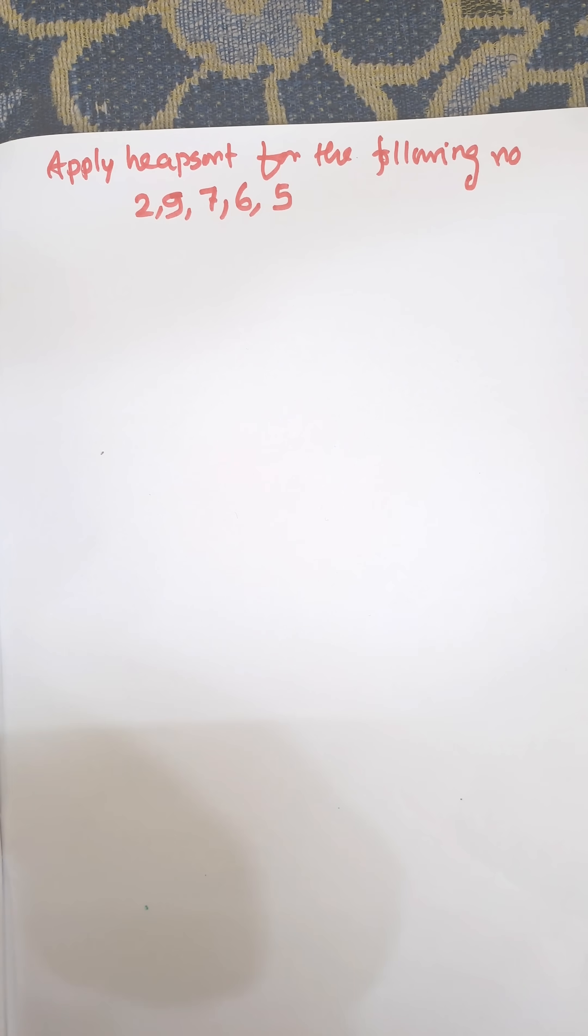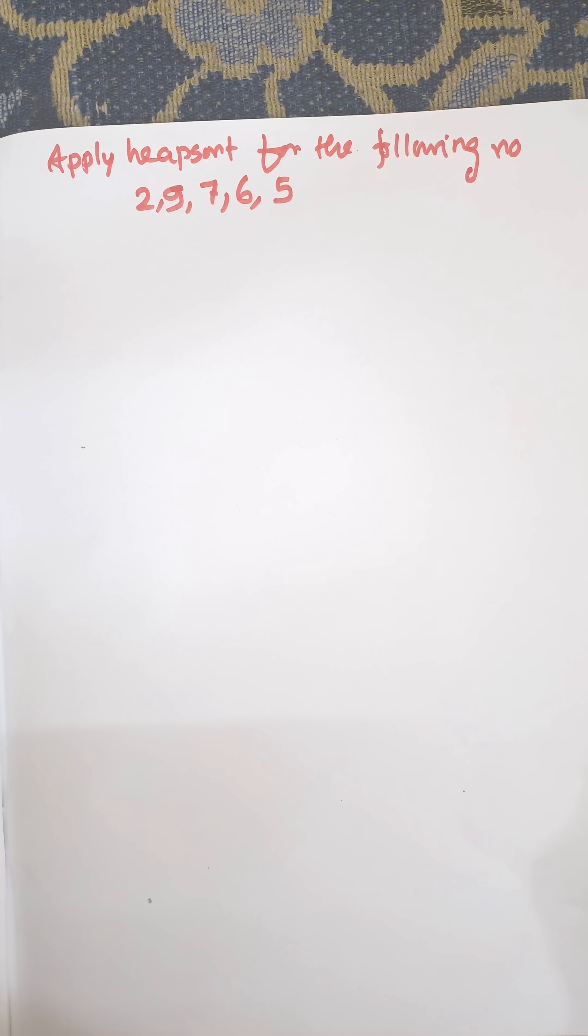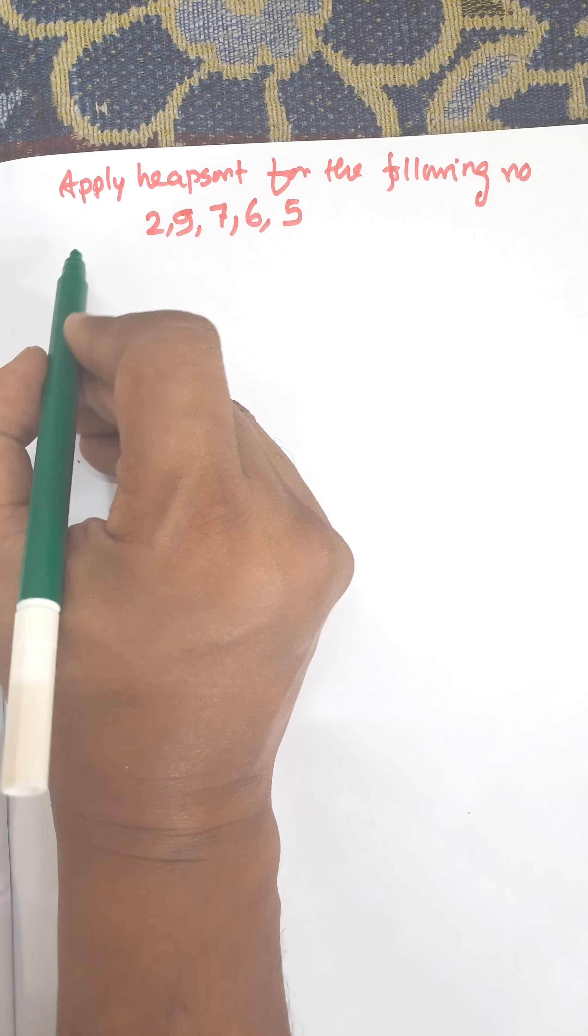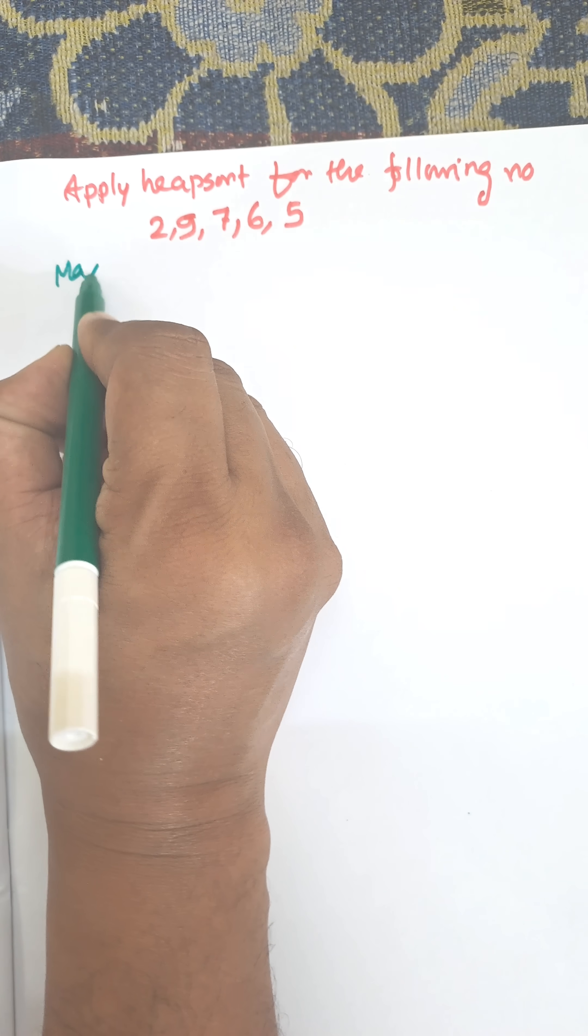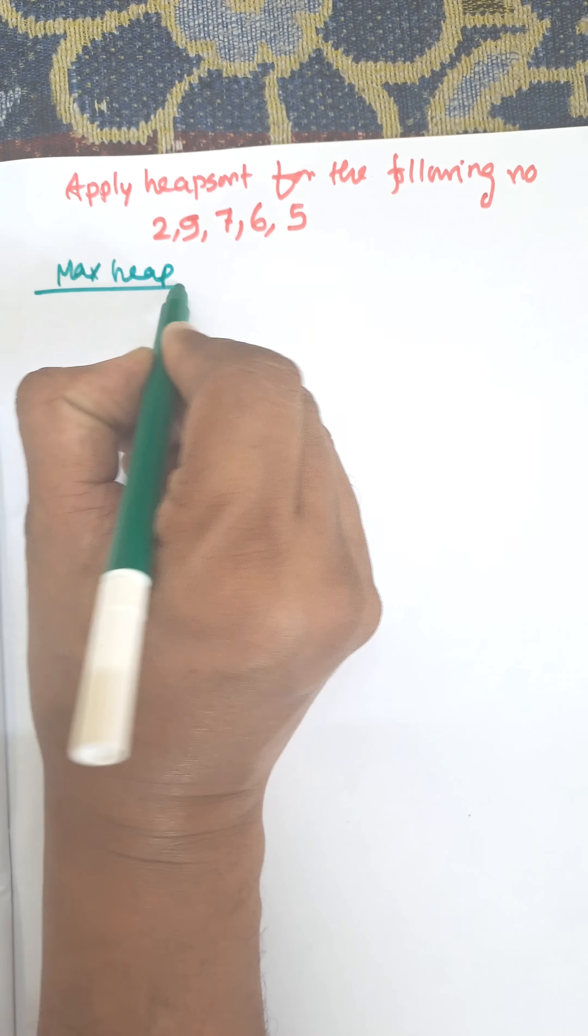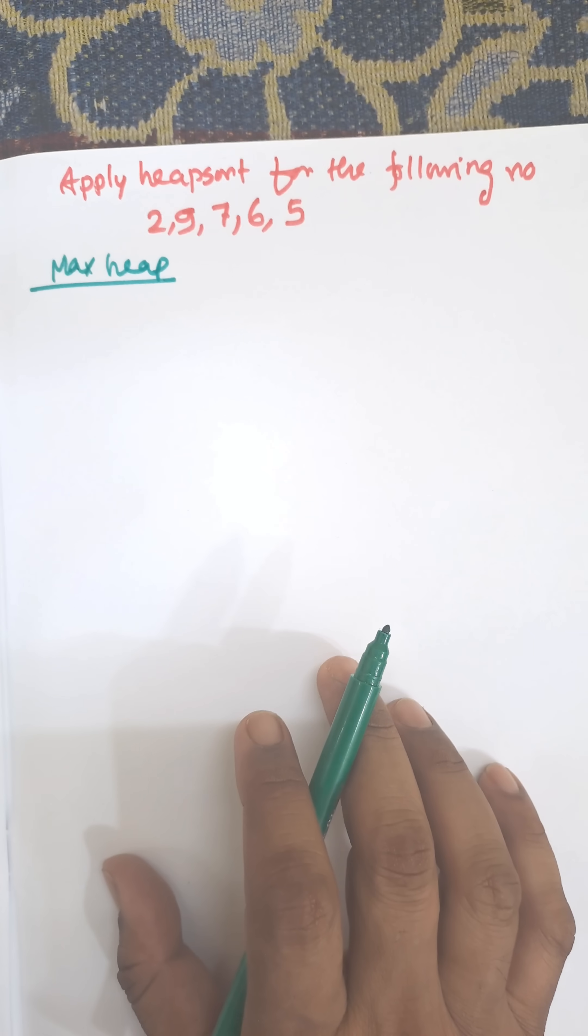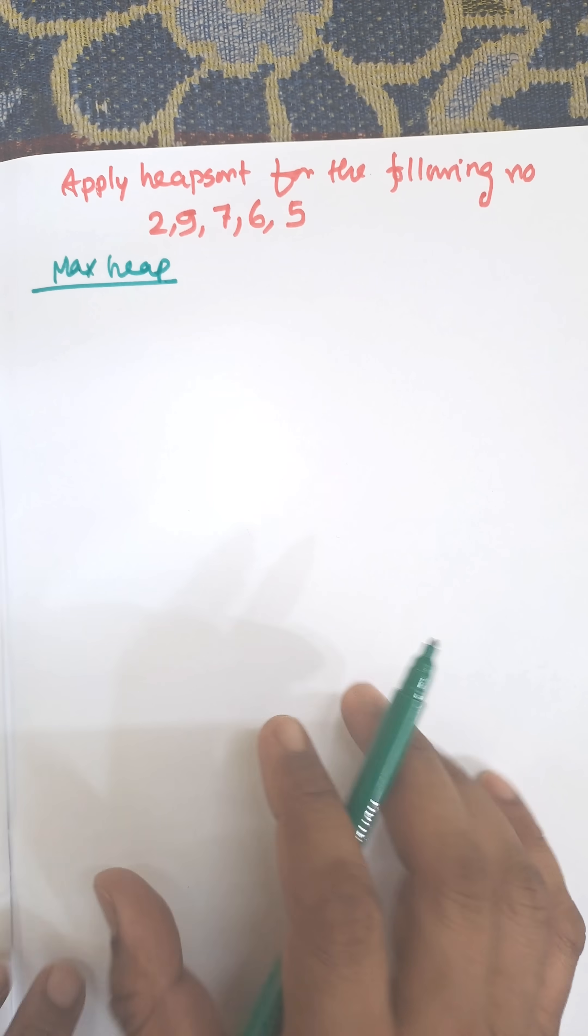In this video, I am going to discuss Heap sort algorithm for the following numbers: 2, 9, 7, 6, 5. First of all, we need to construct a MaxHeap. In the MaxHeap, the root node is always greater than the child node.